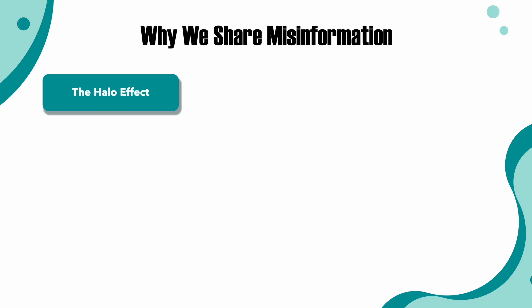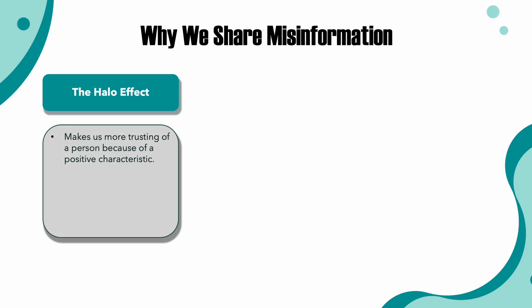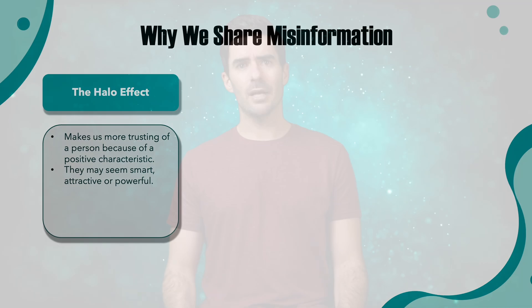Number one: the halo effect. The halo effect is a bias that makes us more trusting of a person because of some positive characteristic — maybe they seem smart, attractive, or powerful. If you follow influencers on social media, it's likely because you find them charismatic or interesting. After all, you don't get to 100,000 followers by being dull and unappealing. But traits like power and charisma have no bearing on the quality of information a person is presenting, so we need to be careful when resharing it.